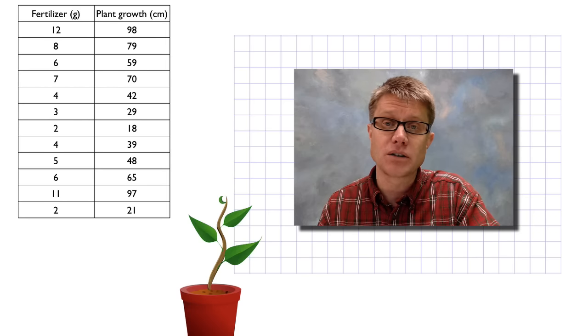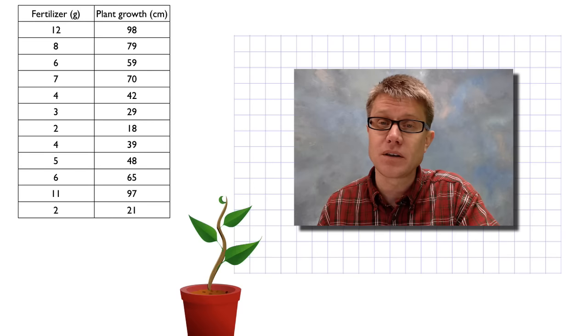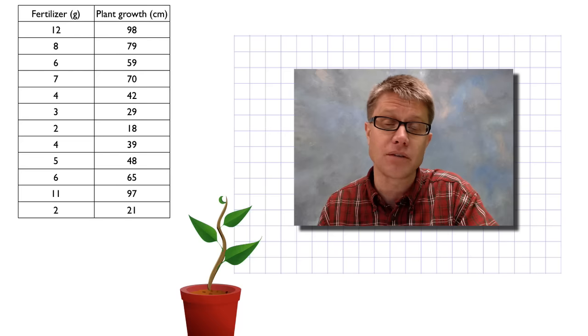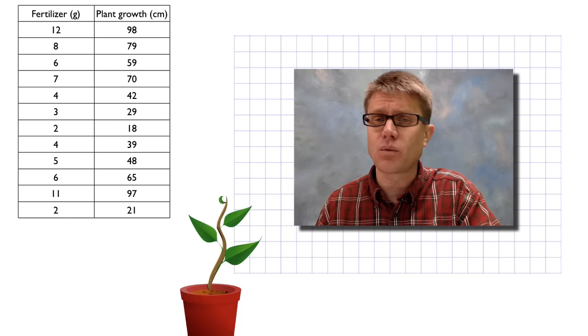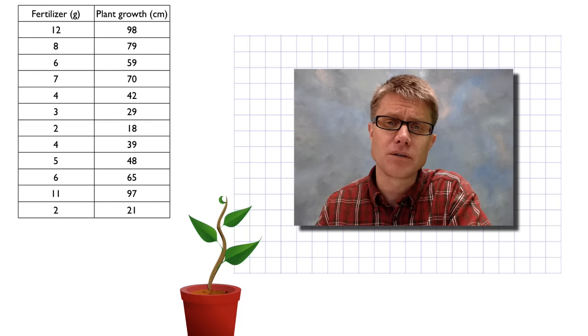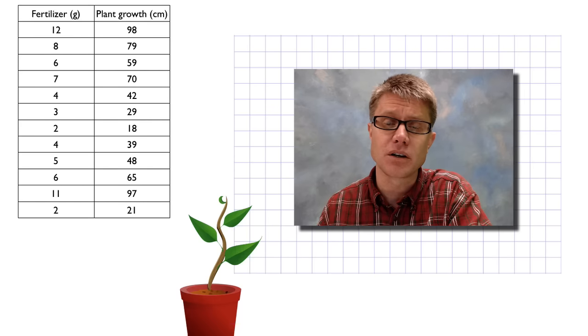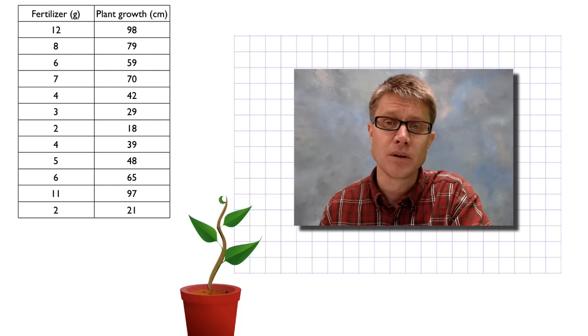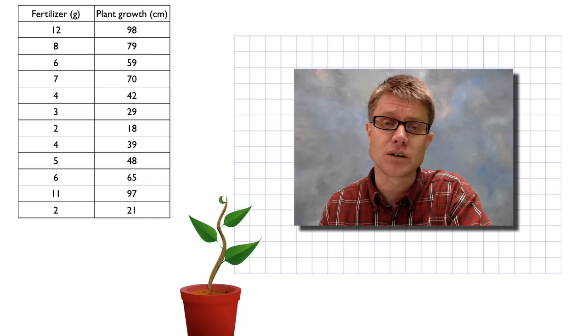You could pause the video if you want to right now. You could try to make a graph of this data and then come back and look at the important parts of a graph and how I set it up. Or you could just watch me and then when you're done try a graph of your own. The first thing you want to do is figure out what kind of graph you're going to use. In this case I'm going to use a scatter plot because I'm looking at the correlation between two number sets.